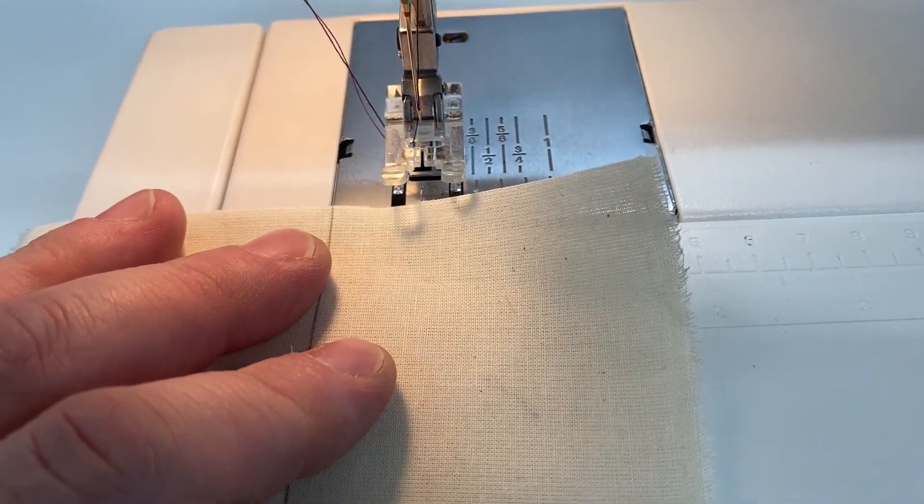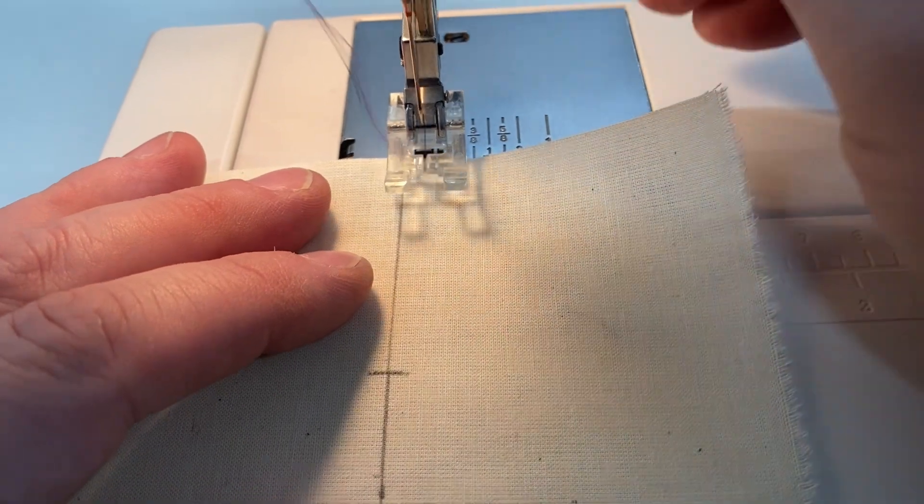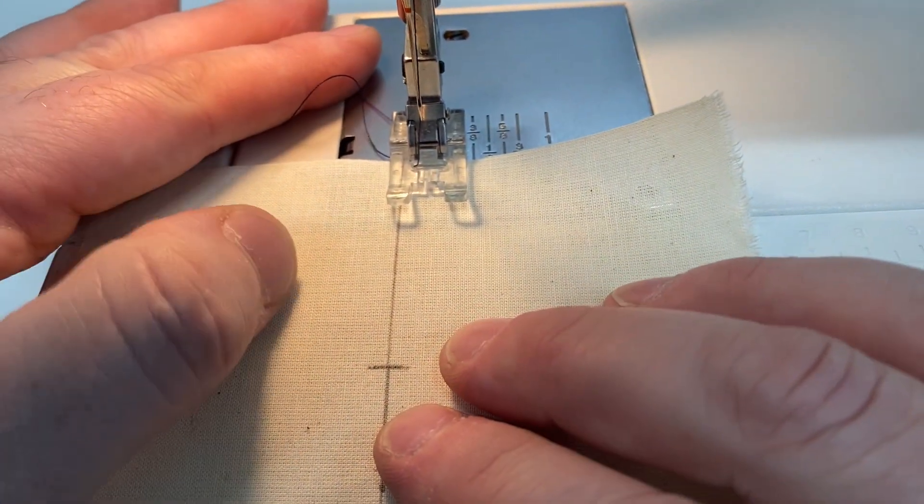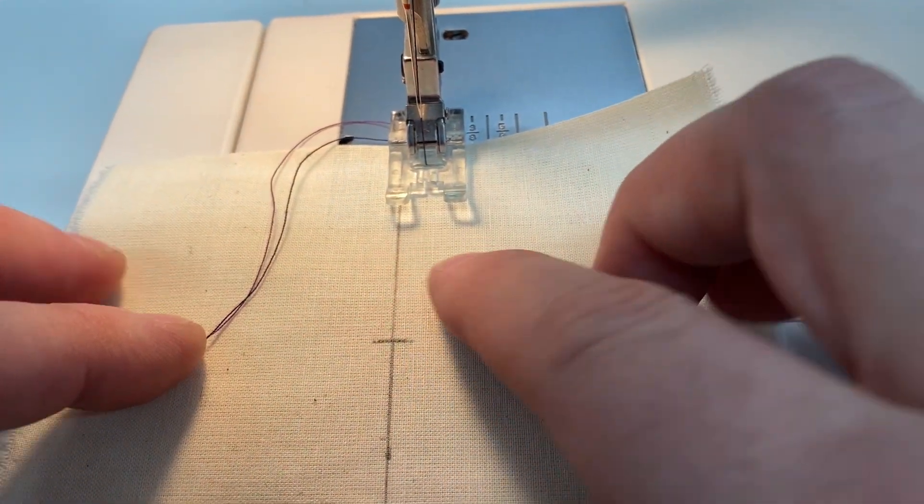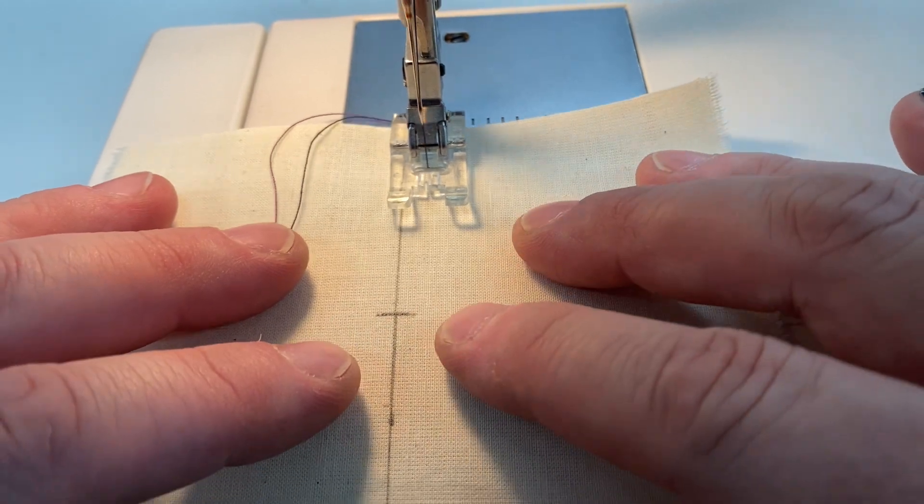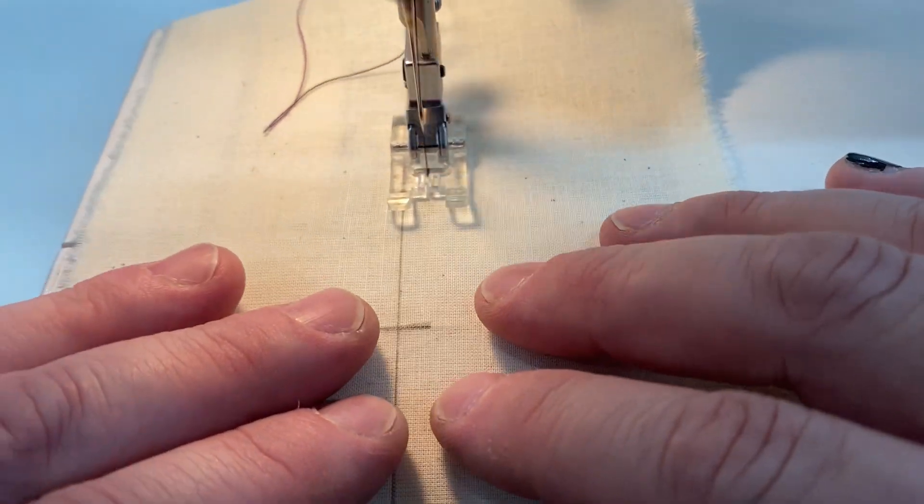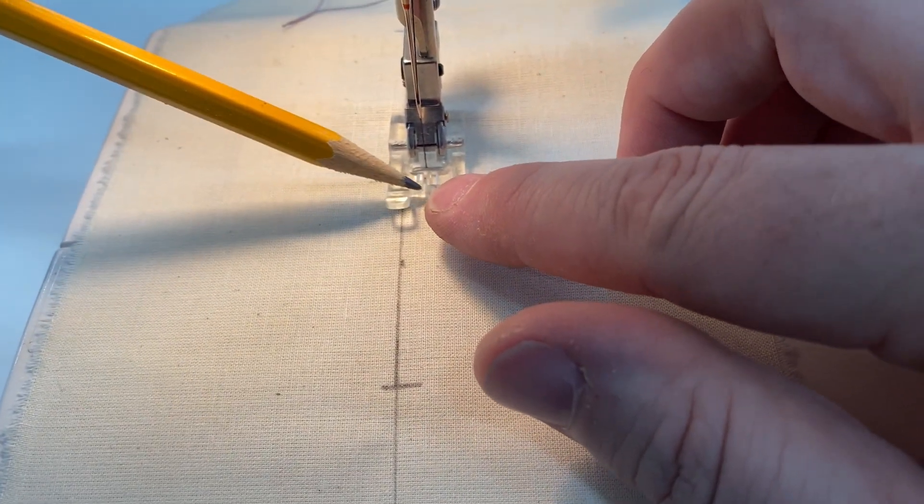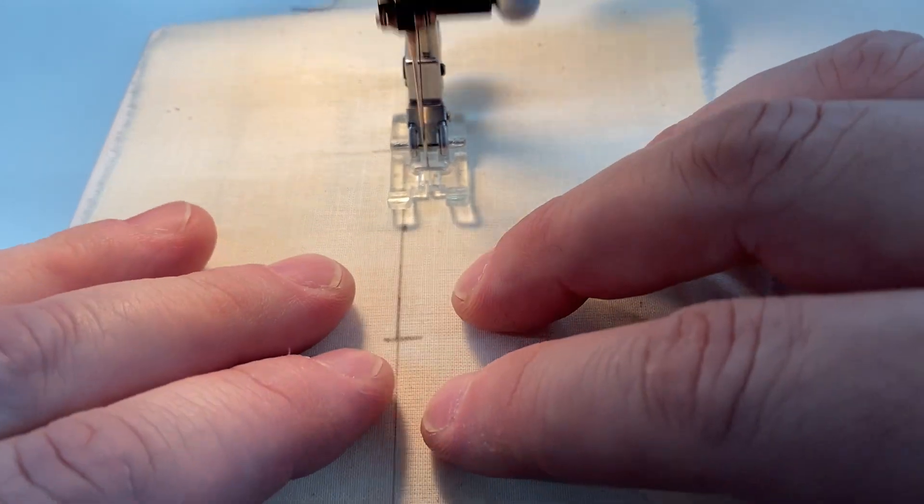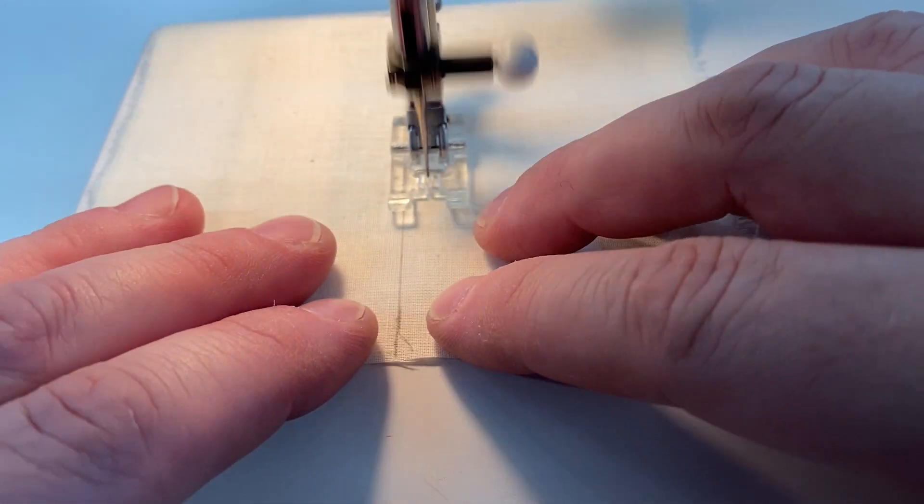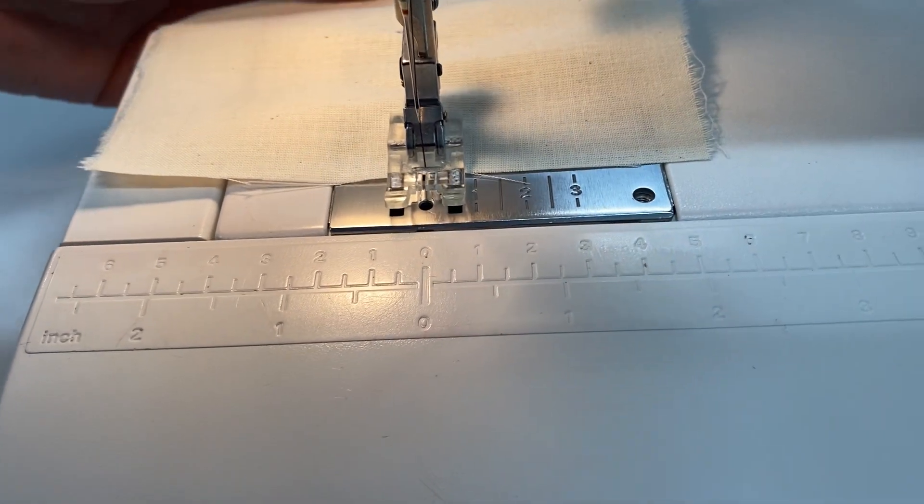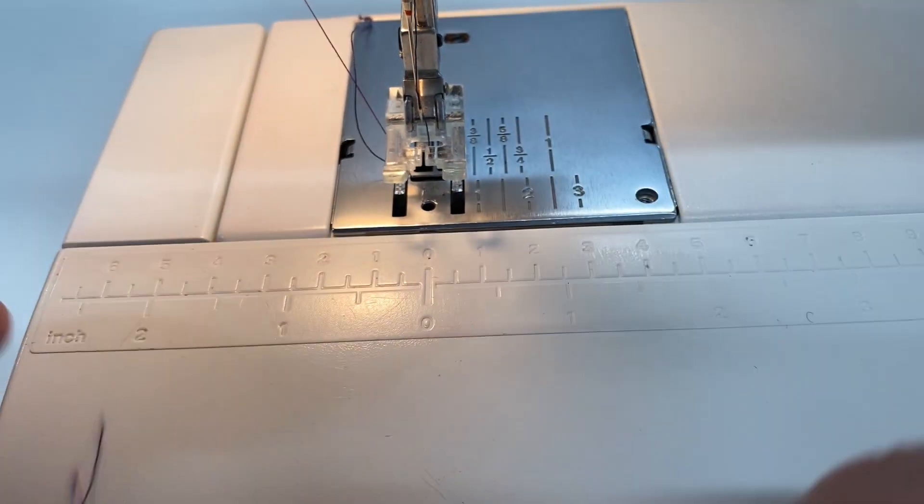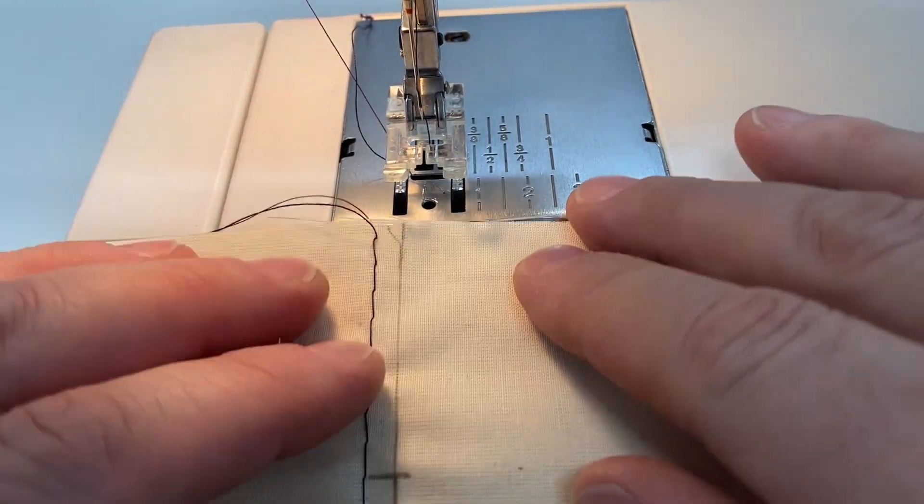Again, don't forget to set your stitch length to a six or a five, something very big, and don't back stitch. See how I'm about an eighth of an inch or so away from that edge? Actually, that's closer to a quarter. This should be fine. You don't want to go much farther than this. If you want to, you can set it up right with that little notch in your presser foot. I've got one. Don't forget to leave yourself some tails because it's gathering, so you're going to need those tails. And I'm going to sew the other side.